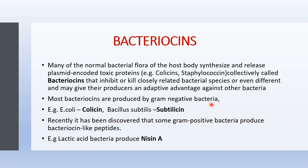For example, E. coli produces a bacteriocin compound called colicin. In the same manner, Bacillus subtilis, which is gram-positive, has also been found to produce bacteriocins. Recently it was discovered that some gram-positive bacteria produce bacteriocin-like peptides — for example, lactic acid bacteria produce nisin, a type of bacteriocin that inhibits the growth of a wide range of other gram-positive bacteria.